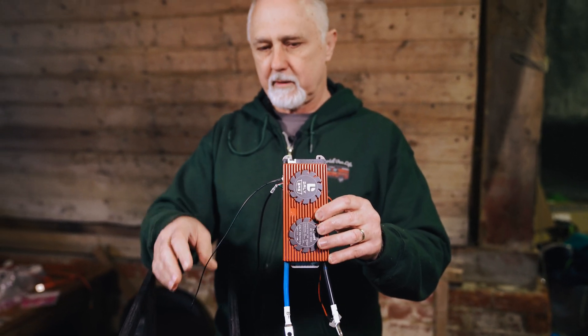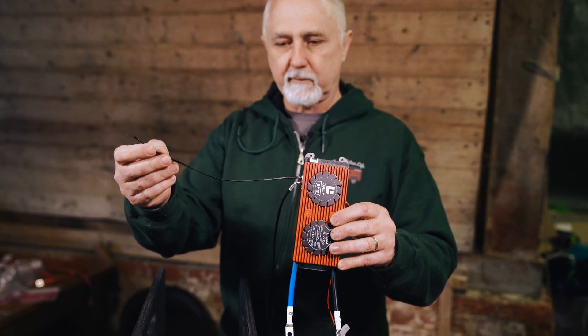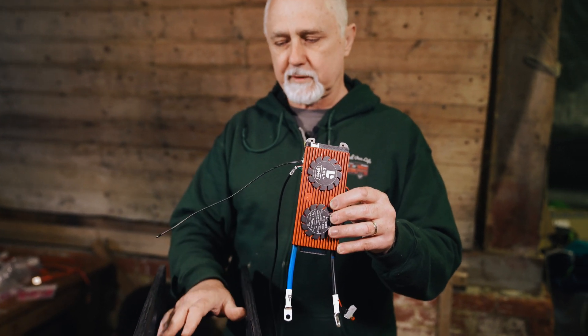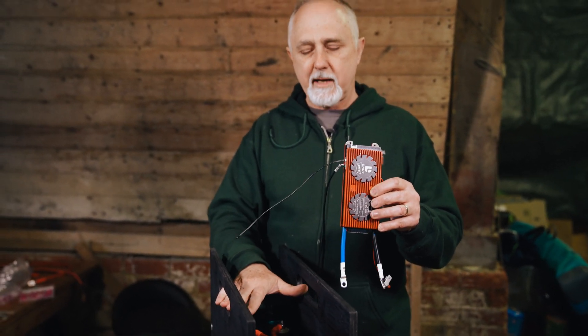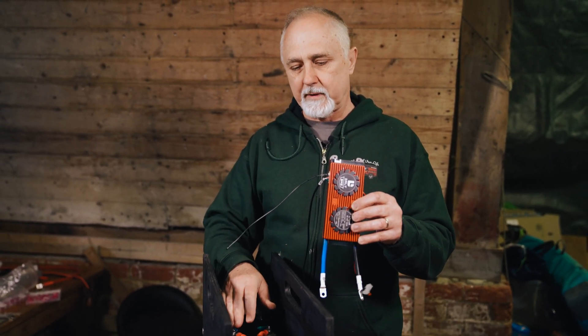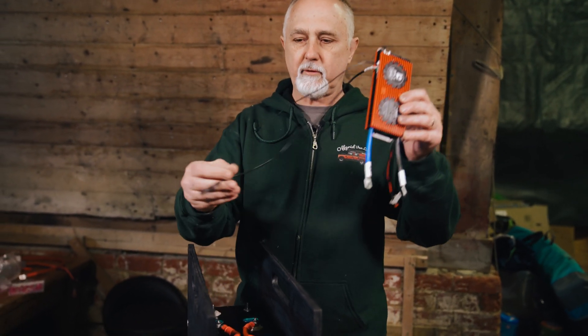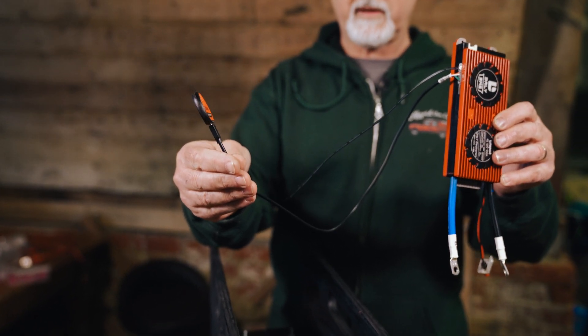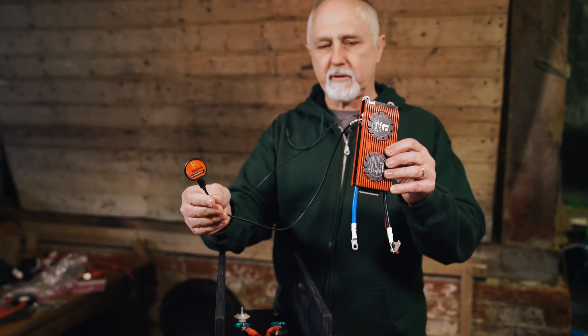It has a temperature probe so we will set that to cut off at five degrees centigrade or less to protect the cells. One thing with lithium iron phosphate, if you don't already know, you should never charge them below zero degrees centigrade, and in fact below five degrees you should reduce the amount of charge if you have a very high capacity charger. It has a Bluetooth dongle so we'll mount this somewhere so that it sends a nice signal and the customer will be able to use the app supplied by Daly to monitor the battery and see what's going on.